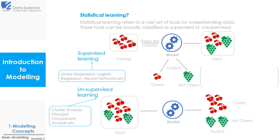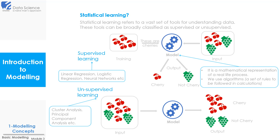So the next question is: what is a model? A machine learning model is a mathematical representation of a real life process, and we use algorithms for building a model. Algorithms are a set of rules which are to be followed in calculations.